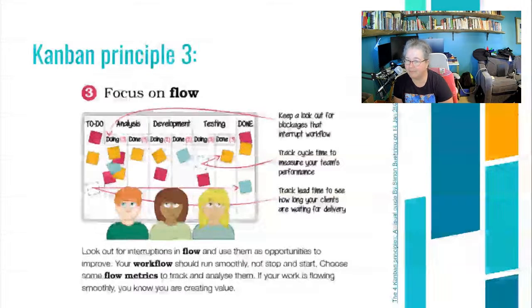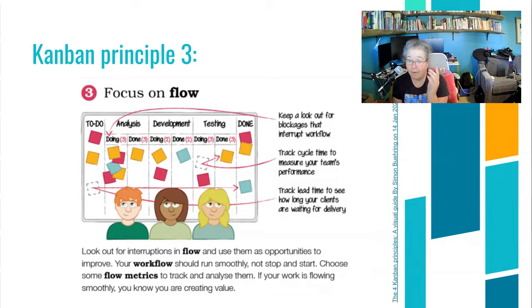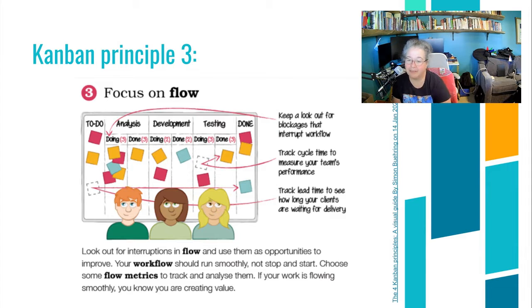Kanban principle three focuses on this continuous flow piece, and this is the real power of something like Kanban used inside the digital tool of Trello. If we look out for those blockages that interrupt workflow, then we can improve our team's performance when we can anticipate when those hard times or blockages are going to happen. I'll show you how you can upgrade Trello to measure some of this flow.